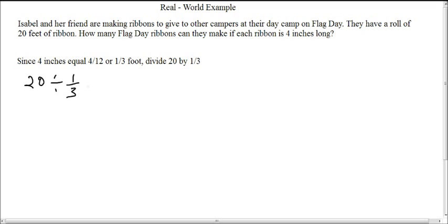but still same concept. We must make sure that we take 20 and write it as an improper fraction by putting 20 over 1. So here we will have 20 over 1 divided by 1 over 3.